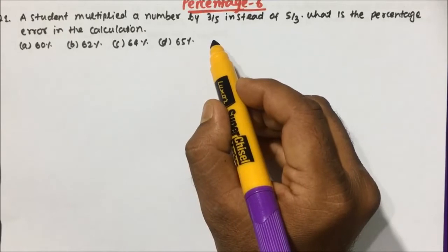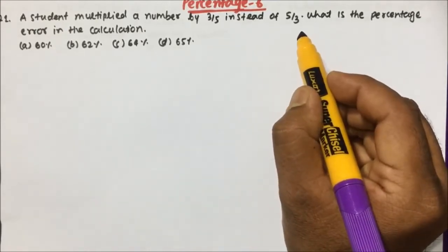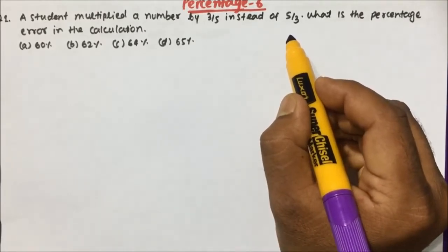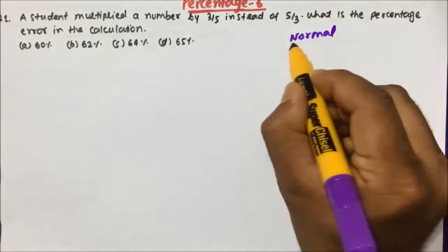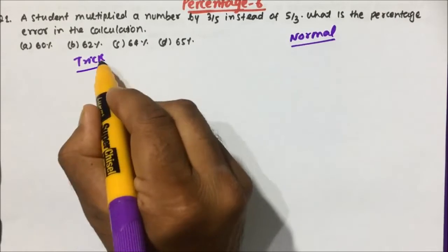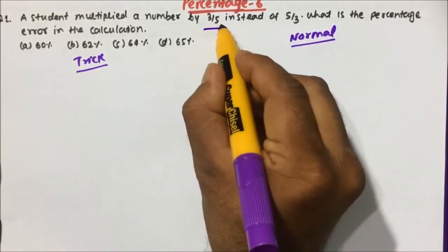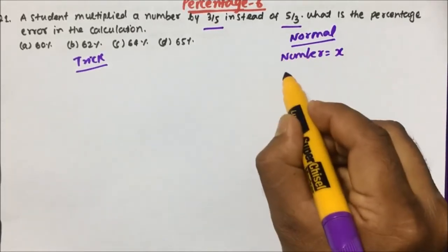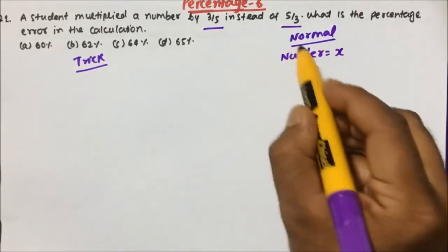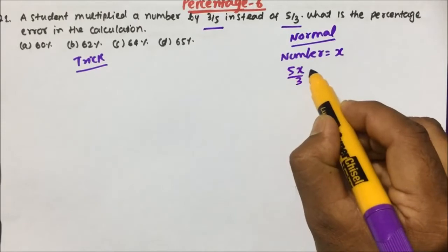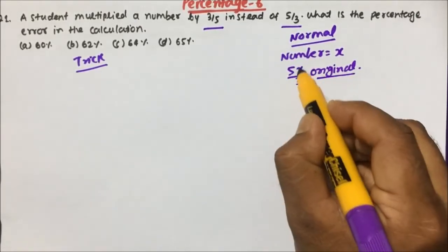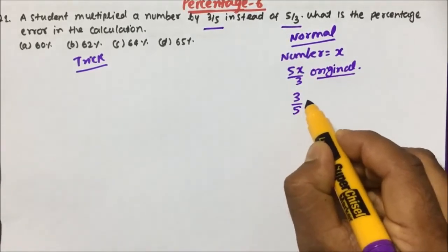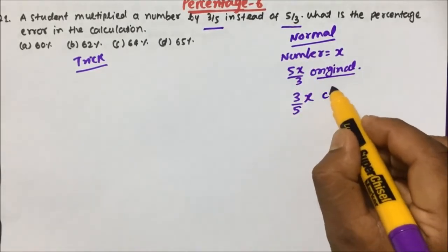A student multiplied a number by 3/5 instead of 5/3. What is the percentage error in the calculation? This question seems to be very easy, but when you consider x and solve it, it becomes complicated. So in the normal method, let the number be x. Actually the student has to multiply by 5/3, so 5x/3 was the original value. But the student multiplied by 3/5 instead — this is the changed value.